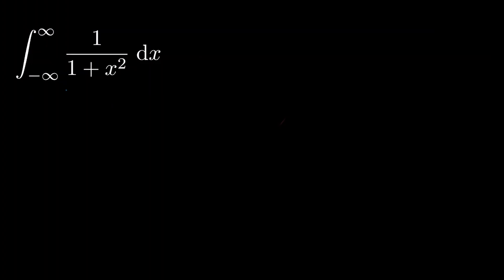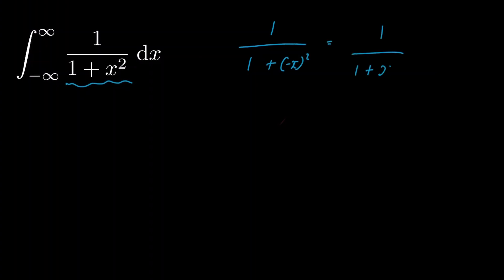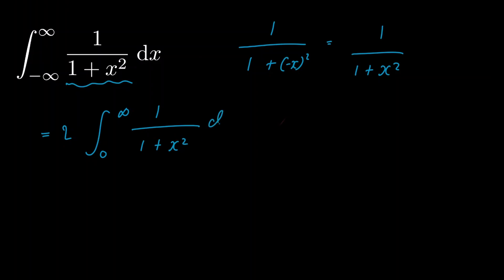Let's begin by noticing that our function right here is an even function, because we have 1 divided by 1 plus (−x)² which is equal to 1 divided by 1 plus x². So what that means is that we can rewrite our integral as 2 multiplied by the integral from 0 to infinity of 1 divided by 1 plus x² dx.